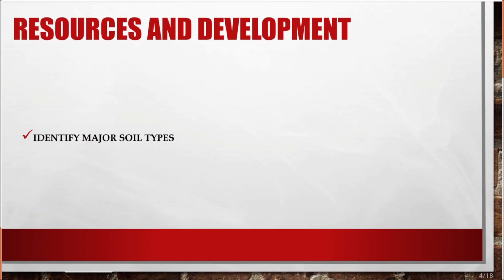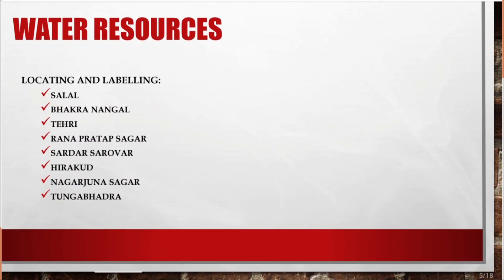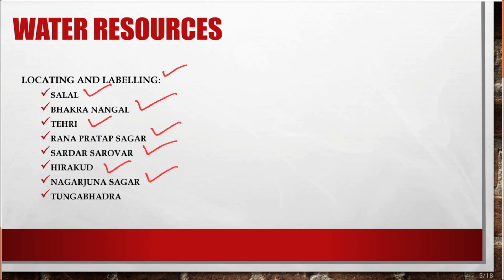Next one is Resources and Development. Here they may ask you to identify the major soil types — different types of soil and in which places those major soils are available. Then the next one is Water Resources, where you need to locate or label: Salal, Bhakra Nangal, Tehri, Rana Pratap Sagar, Sardar Sarovar, Hirakud, Nagarjuna Sagar, and Tungabhadra.